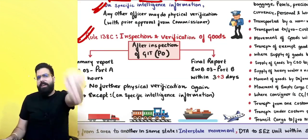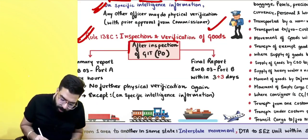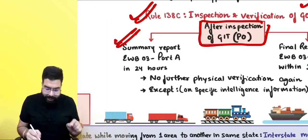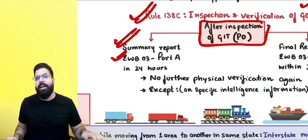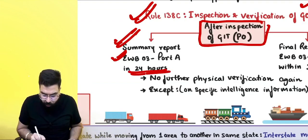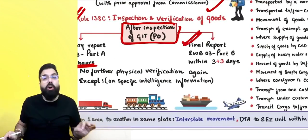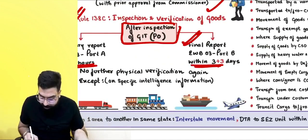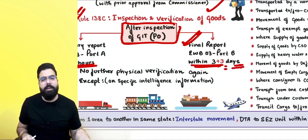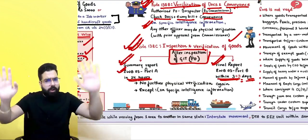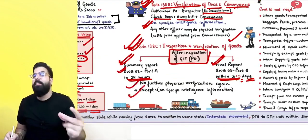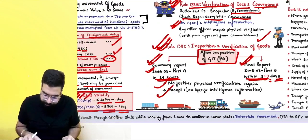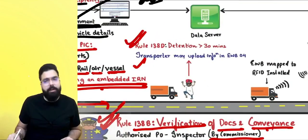Rule 138C covers inspection and verification of goods. After inspecting goods in transit, the proper officer will upload a summary report online in GST EWB-03 Part A within 24 hours, and a final report in GST EWB-03 Part B within three days (extendable by three more days with Commissioner approval). Once the report is uploaded, no physical verification will happen again unless there is specific intelligence information of wrongdoing.